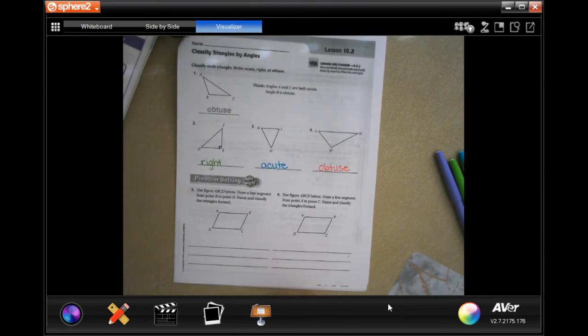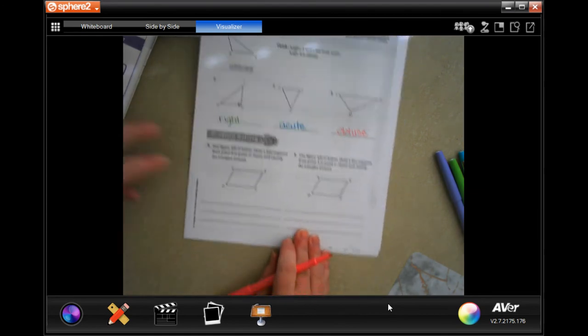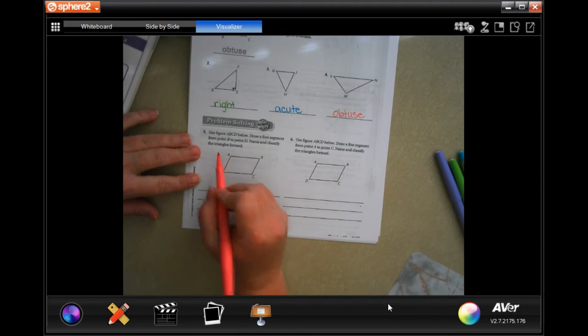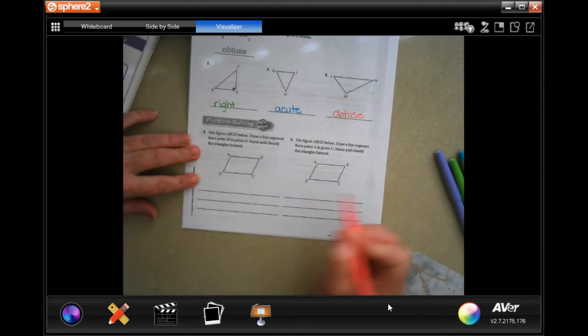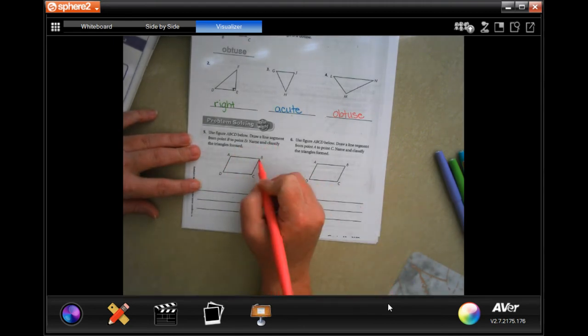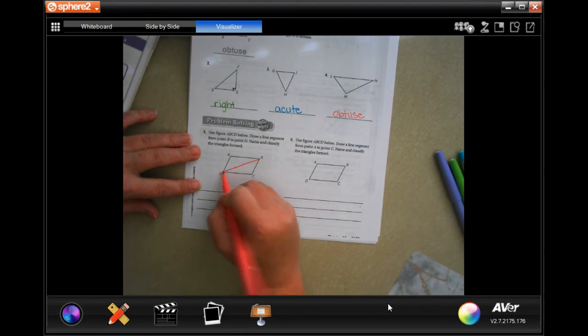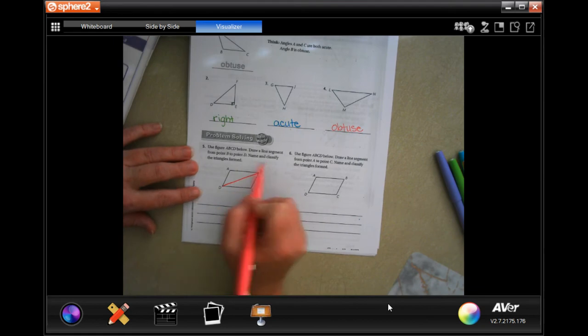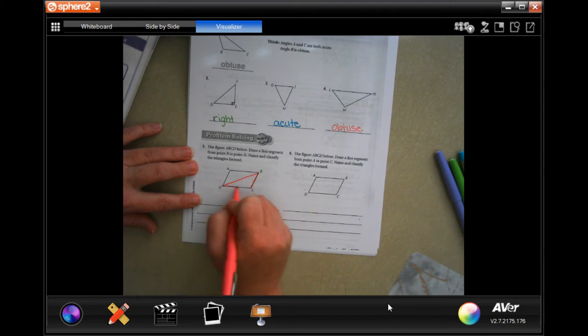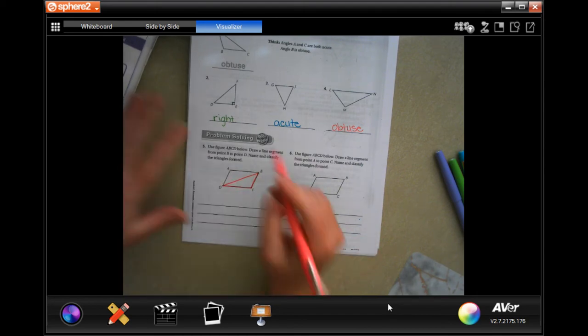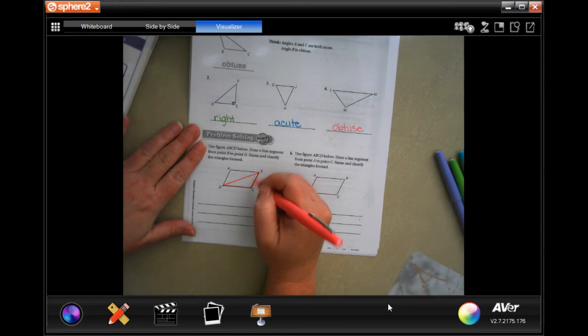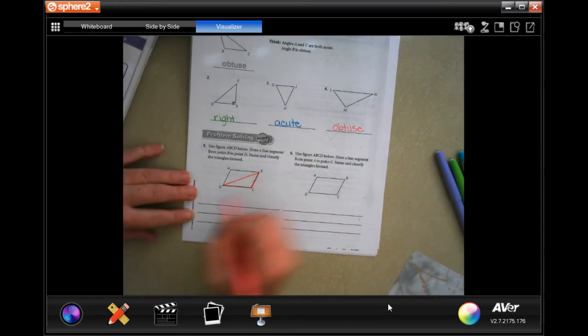All right, so now it wants us to draw a line segment between B and D on this one, between B and D. Now it wants us to name and classify the triangles formed. Well that is bigger than 90 degrees - 90 degrees would be going straight up and down - which makes it obtuse.